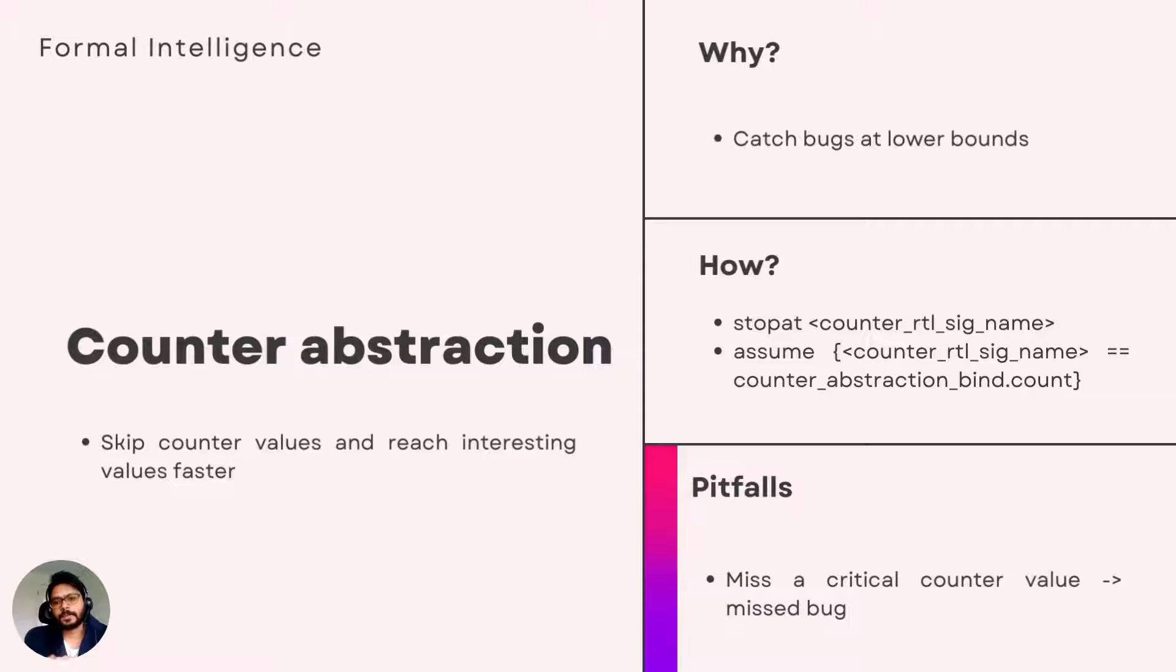How can you do counter abstraction? Cut point the counter signal and drive it using the abstract counter value from your abstraction. When I say your abstraction, it can be a module or it can be a piece of code which you're going to write, which I'll show you in the next slide. So is there any problem with doing counter abstraction? Yes.